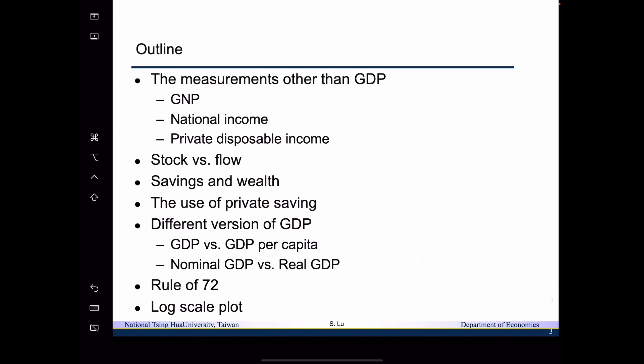We will talk about GDP versus GDP per capita, and nominal GDP versus real GDP. Toward the end, we are going to talk about two techniques for showing the data. One is the rule of thumb, that is called the rule of 72.